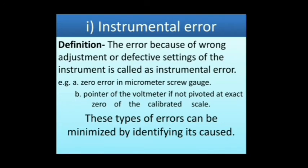The error due to wrong adjustment or defective settings of the instrument is called Instrumental error. For example, zero error in the micrometer screw gauge, or the pointer of a voltmeter not pivoted at exact zero of the calibrated scale. These types of errors can be minimized by identifying their causes.